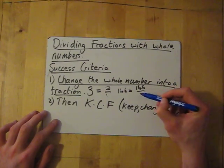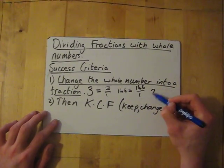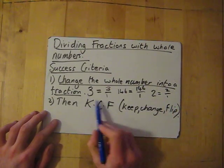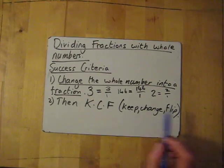If I had 2 as a whole number and I want to change it into a fraction, it would be 2 over 1. So this is how we change it into a fraction.